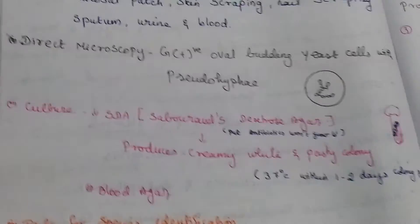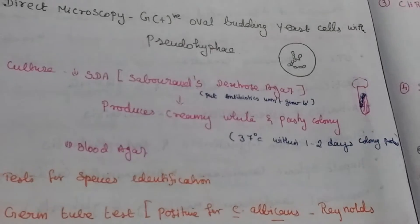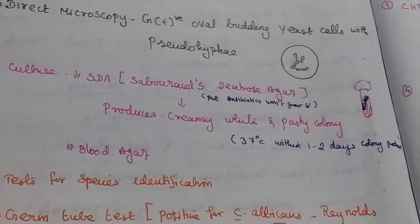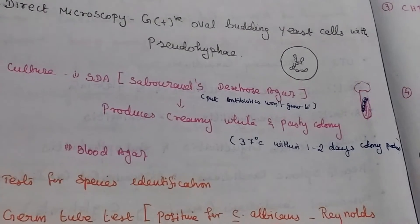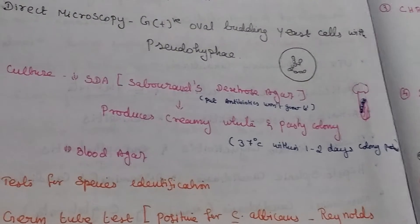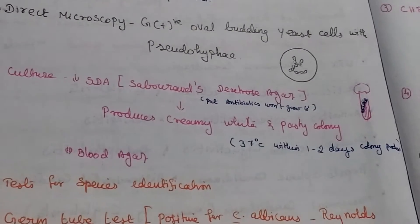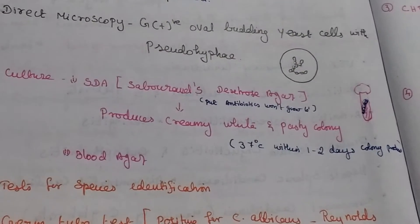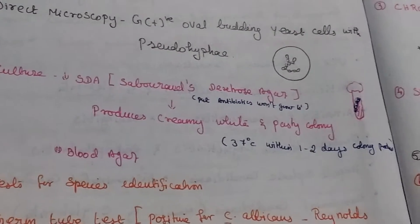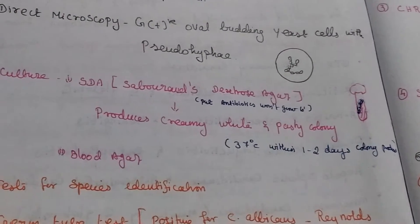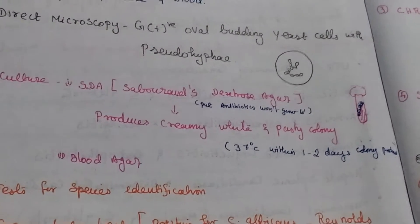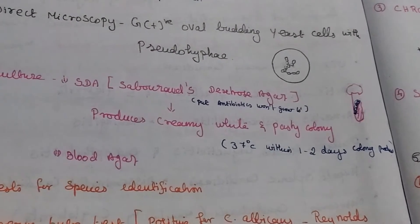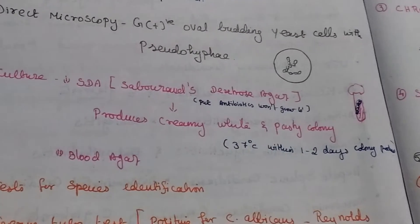Then culturing is performed using different types of media: Sabouraud dextrose agar (SDA), DCA, and blood agar. In SDA, an antibiotic is added to prevent the growth of bacteria. We incubate at 37 degrees Celsius, and within 1 to 2 days, creamy white and pasty colonies will appear.